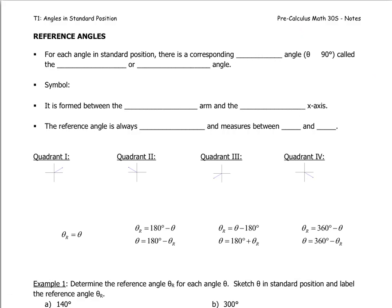Now we're going to talk about another new term called a reference angle. For each angle in standard position, there is a corresponding acute angle — theta sub r — which must be less than 90 degrees. This is called the reference angle. The symbol is theta with a subscript r. It is formed between the terminal arm and the closest x-axis, and the reference angle is always acute, measuring between 0 and 90 degrees.